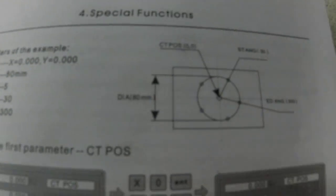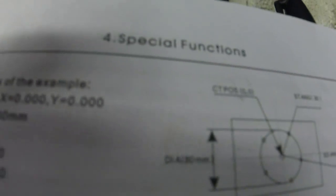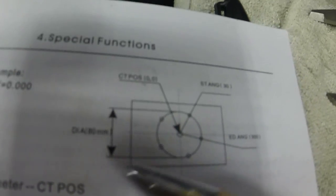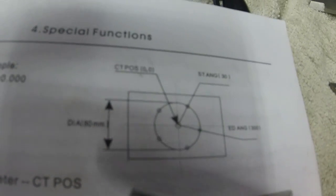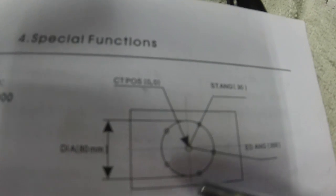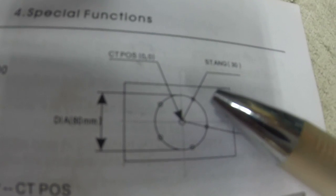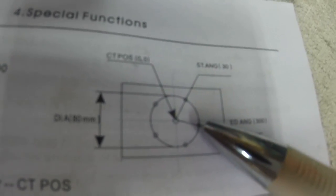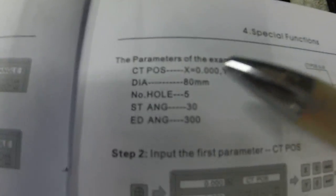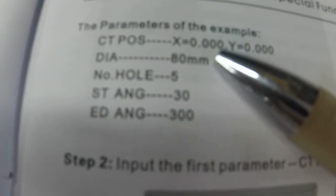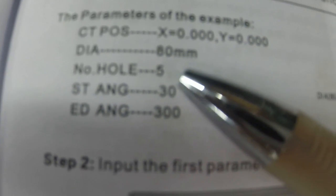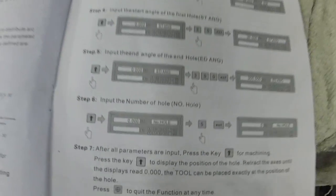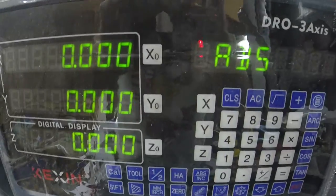The manual shows an example with a diameter of 80mm, a center position, a starting angle, and an ending angle. In the sample, the starting angle is zero, diameter is 80 millimeters, five holes, starting angle of 30, and ending angle of 300.